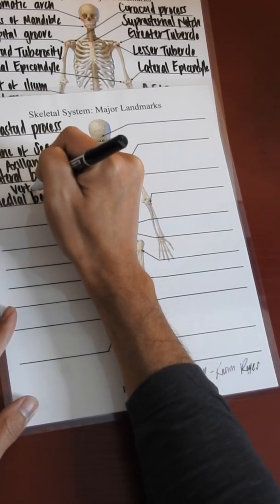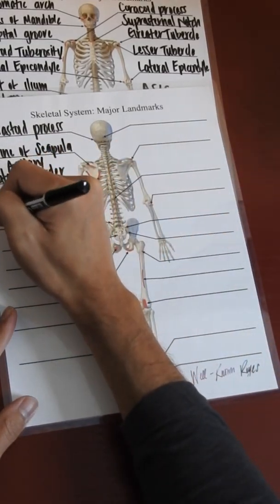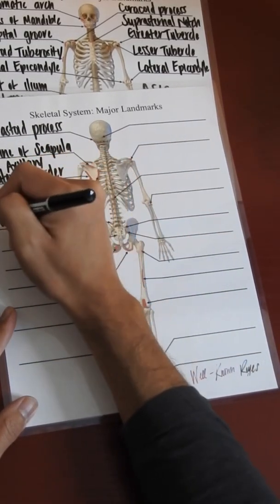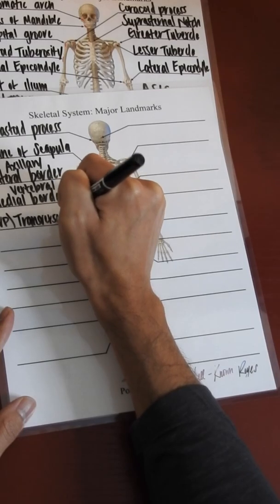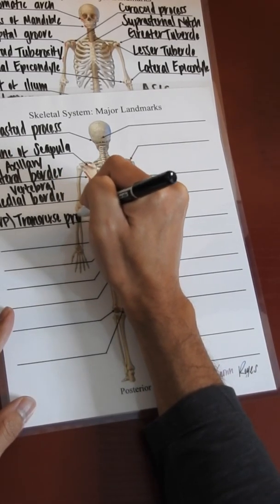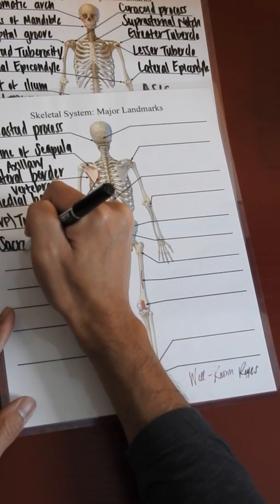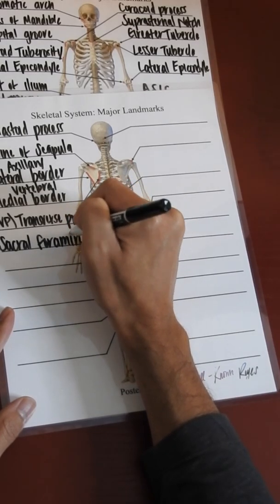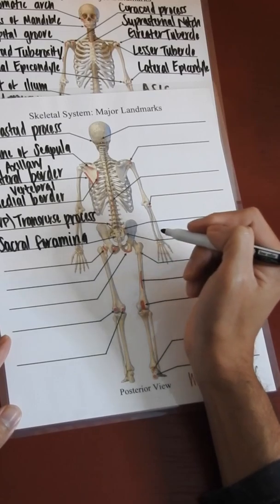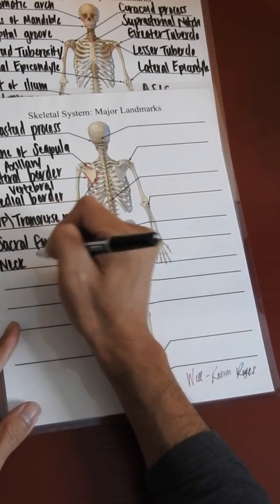We have the medial border of the scapula, also known as the vertebral border. We have the TVPs, also known as the transverse processes, we have the sacral foramina, and we have the neck of the femur.